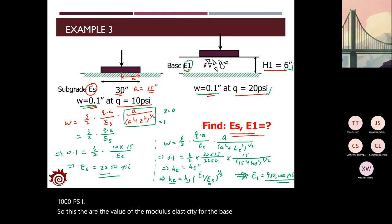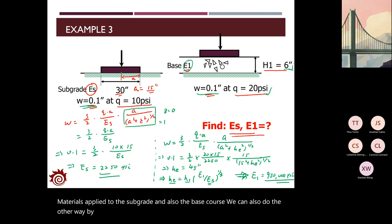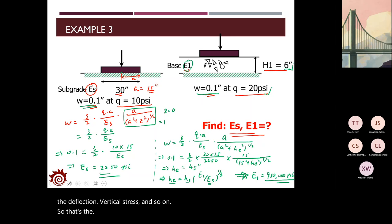This example is quite interesting—it shows how to use observed deflections to back-calculate material properties of the subgrade and base course. We can also do the reverse: given material properties, calculate deflection, vertical stress, and other parameters. That concludes the topics on stress and strain analysis for flexible pavements.